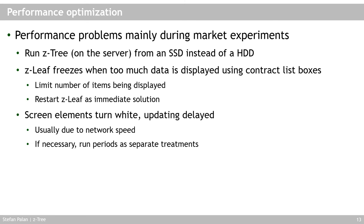Displaying too much data using contract list boxes can cause CETRI to freeze. To limit this, restrict the number of items displayed in the contract list box using the condition field — for example, showing only the top three or top five items. If a set leaf is frozen and no longer accepts input, you can simply restart the set leaf as a quick fix, just as you would for a leaf crash.